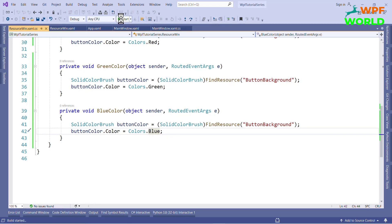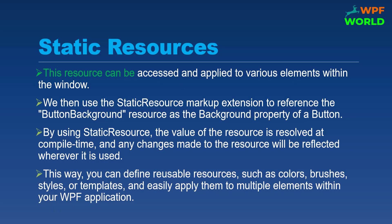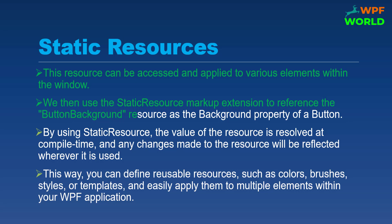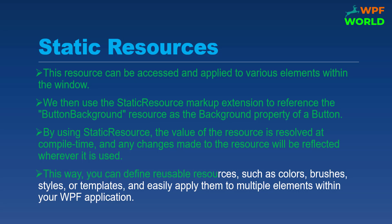Let's run and see the result. If you click on red, the button background color will be red, and if you click on blue then the button background color will be blue. This resource can be accessed and applied to various elements within the window. We use the StaticResource markup extension to reference the ButtonBackground resource as the background property of the button. By using static resources, the value of the resource is resolved at compile time, and any change made to the resource will be reflected wherever it is used. This way you can define reusable resources such as colors, brushes, styles or templates and easily apply them to multiple elements within your WPF application.